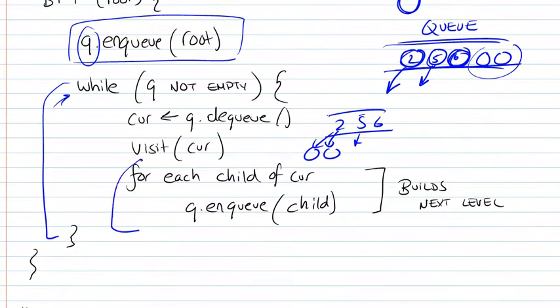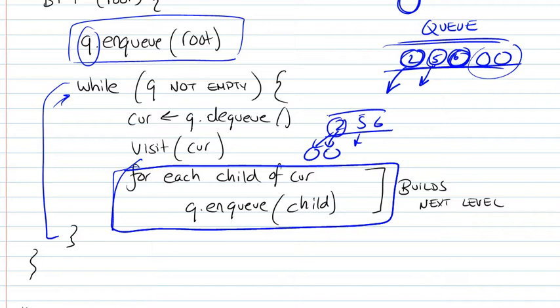So in fact, what we're doing here is we're building the next level. Every time we add the children of a particular node, we're actually building the next level. So when we deal with 2, we add its children to the queue, then we deal with 5, add its children, then deal with 6 and do the same thing.